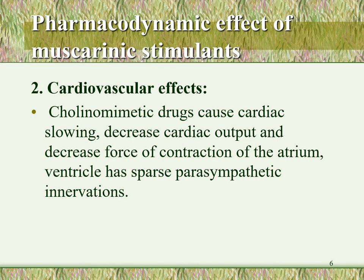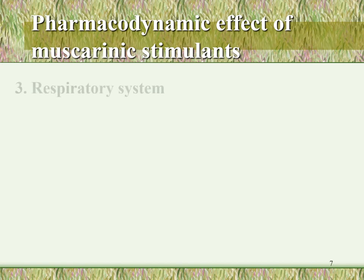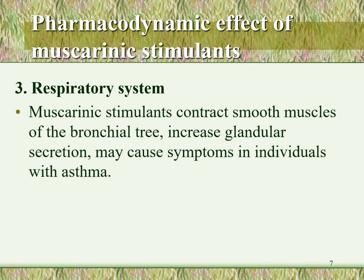On blood vessels, M2 receptors can lead to vasodilation. However, the dominant receptors on blood vessels are adrenergic receptors, especially alpha-1 receptors which cause vasoconstriction. Regarding the respiratory system, the pharmacodynamic effects of muscarinic stimulants lead to contraction of bronchial smooth muscles, causing bronchoconstriction, and also increase in glandular secretions — the respiratory secretions are also stimulated.